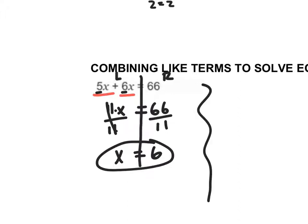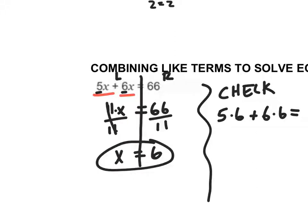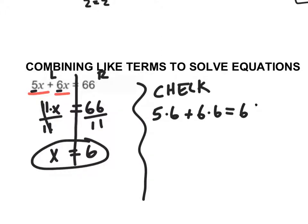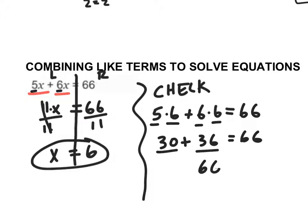Let's check ourselves. I'll do 5 times 6 plus 6 times 6 — does that give me 66? 5 times 6 is 30, plus 6 times 6 which is 36. 30 plus 36 is 66, and that equals 66 — that's true, therefore that is my answer.